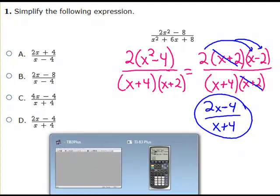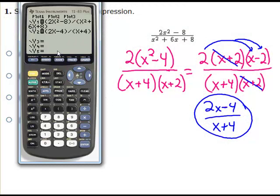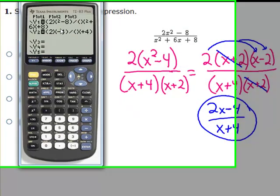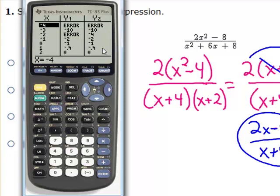To confirm this on a calculator, go to the y equals screen. Make sure you put parentheses — the calculator won't know that 2x squared minus 8 is in the numerator unless it's in parentheses, and it won't know you're dividing by the trinomial unless that's in parentheses too. Type in the original problem and your answer, and go to the table to see that outcomes are the same.